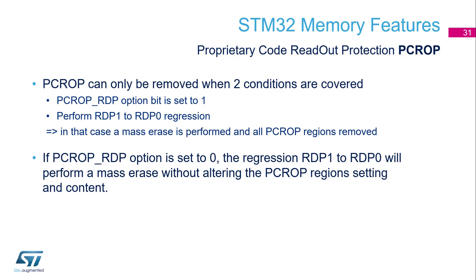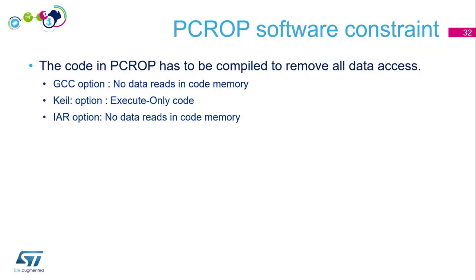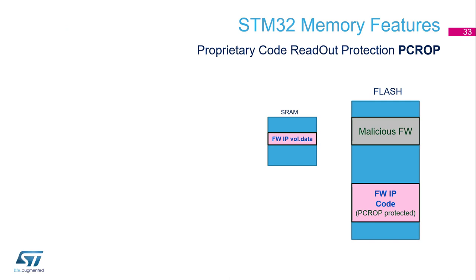The constraints linked to this region: it's execute-only, so you have to compile your code to remove all data access from that portion. There are GCC, Keil, and IAR options for this. You have to modify your scatter file to place only this read-only region in the correct area of flash — not easy. There are application notes to help with that, and we will experiment with this after the theory.